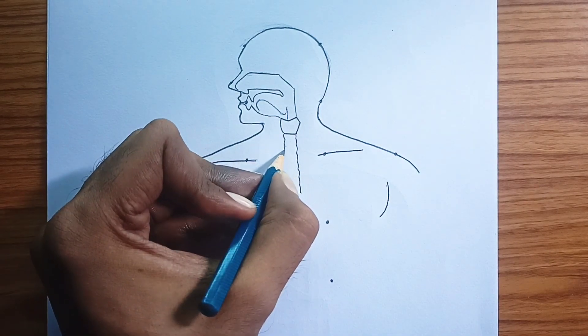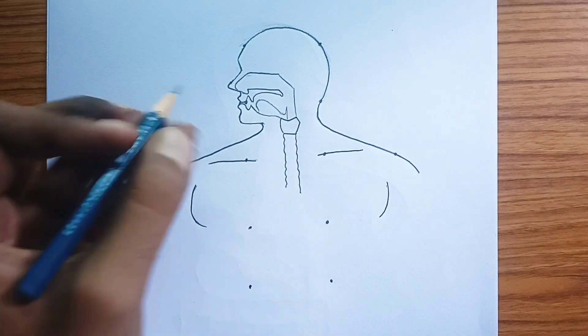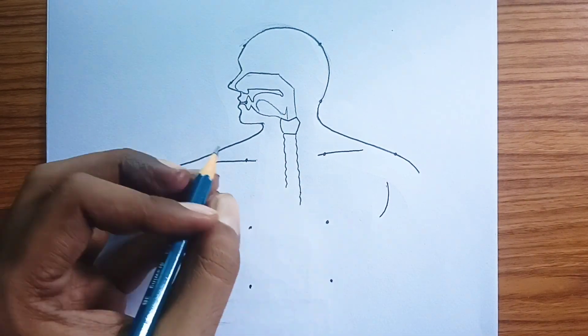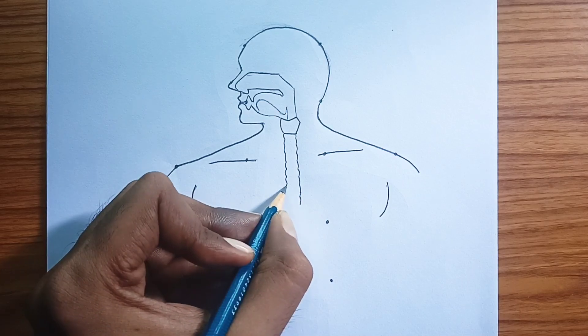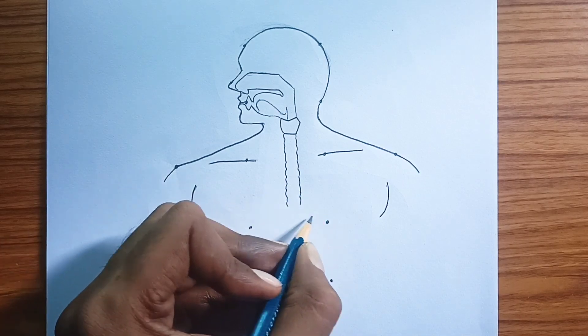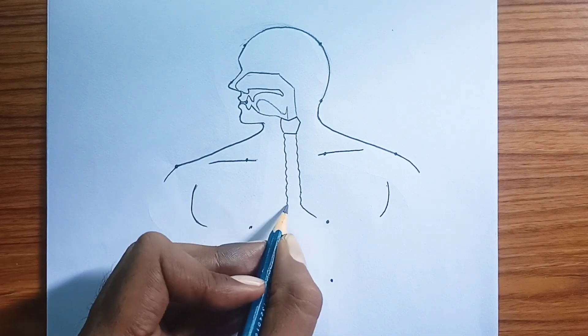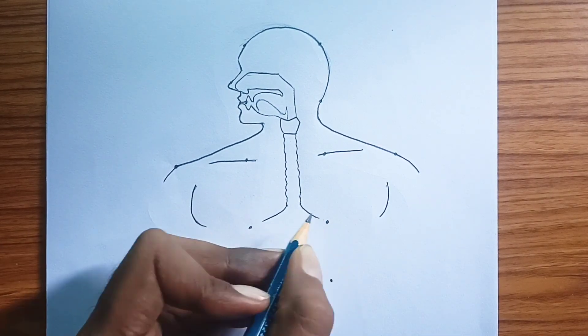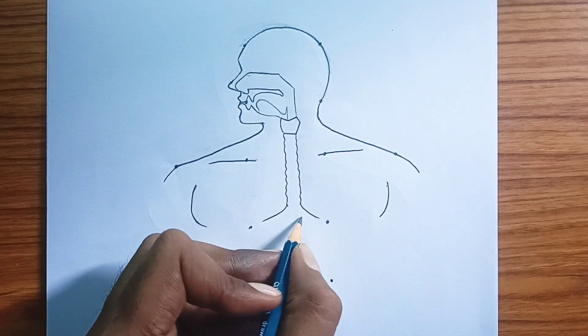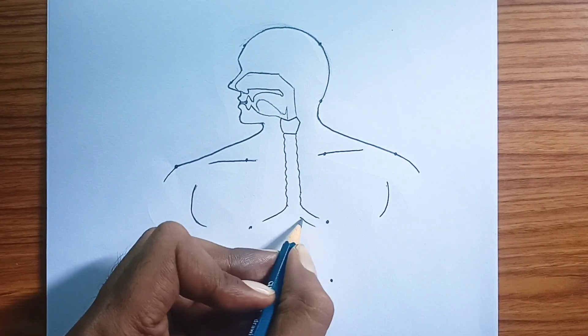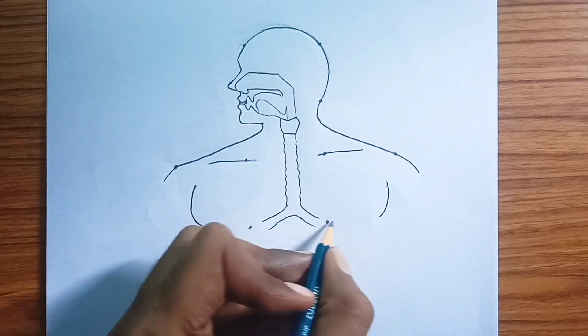This diagram illustrates the human respiratory system, which is responsible for taking in oxygen and expelling carbon dioxide. Here's an explanation of each labeled part.